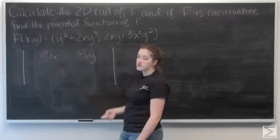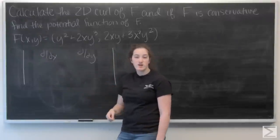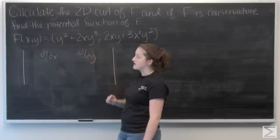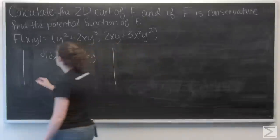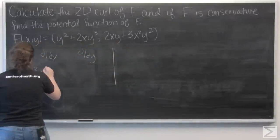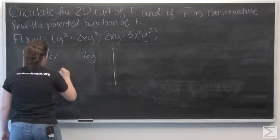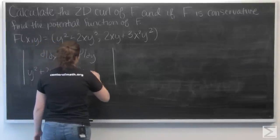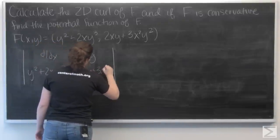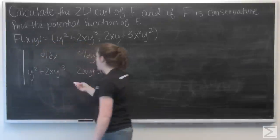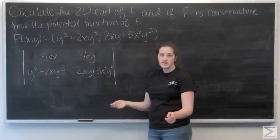And then the second row of the matrix is going to be the i and j components of our vector f of x, y. Okay, so now let's go ahead and take this determinant.